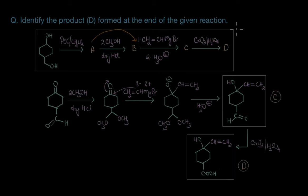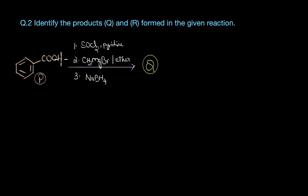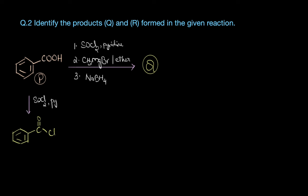Let's look at one more reaction. In this question we need to figure out products Q and R. We will break it into two parts: first analyzing the reactions from P to Q, and then from Q to R. Our starting reactant is benzoic acid, and in the first step we are reacting it with thionyl chloride (SOCl2) in the presence of pyridine. The reaction of a carboxylic acid with thionyl chloride is a classic way to prepare the corresponding acid chloride. So benzoic acid reacts with thionyl chloride to give benzoyl chloride, C6H5COCl.